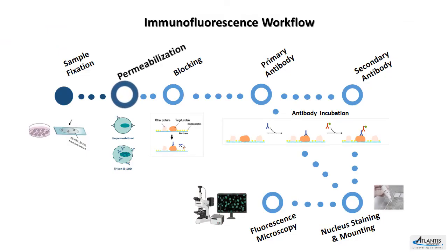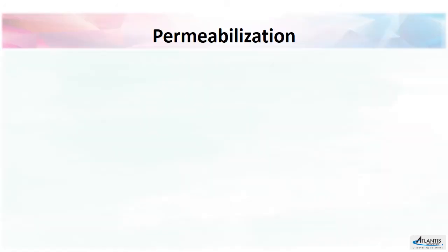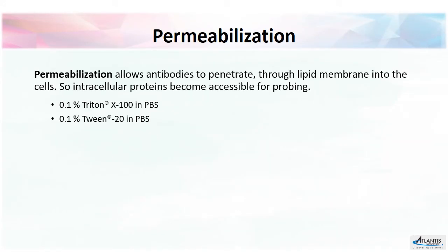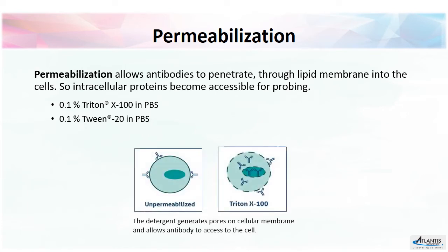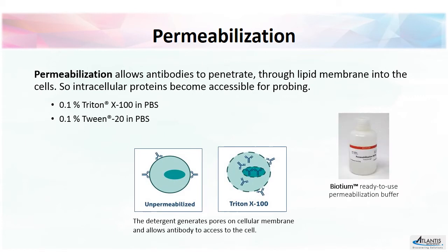The next step is permeabilization. Permeabilization allows antibodies to penetrate into the cells. This can be done by incubating samples in a detergent or permeabilization buffer.